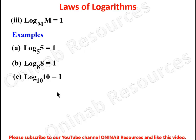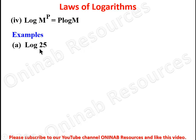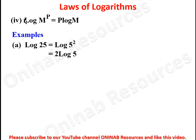The next law: log m to the power of p is equal to p log m. Equivalently, p log m equals log m to the power of p. For example, log 25 — since 25 is a perfect square, it can be written as log 5 squared. Applying this law, we bring down the 2 to get 2 log 5.